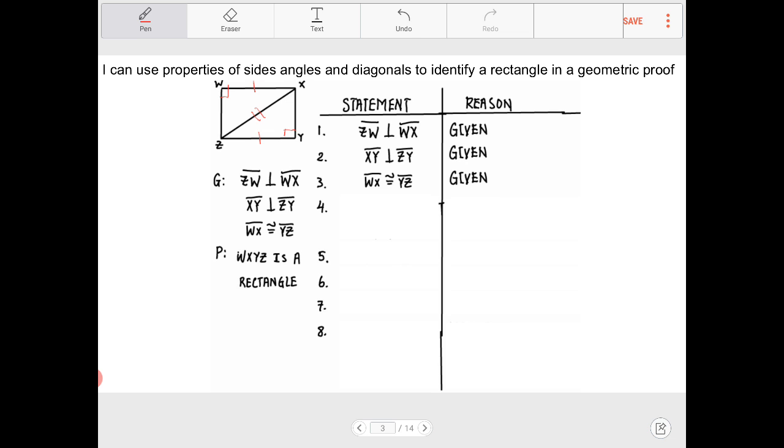So because of the fact that these are right triangles and they are congruent, I can then declare that these corresponding parts of congruent triangles therefore must be congruent.